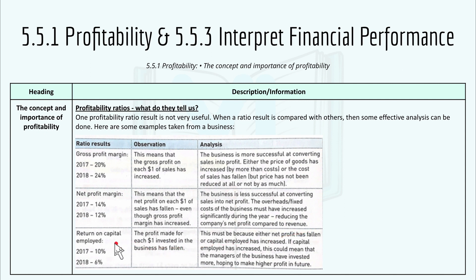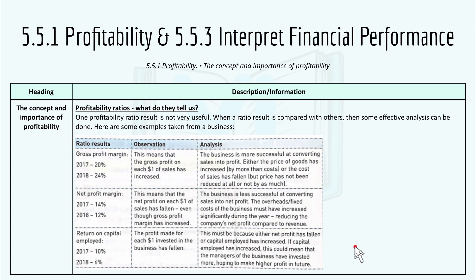For Return on Capital Employed, if 2017 was 10% and 2018 was 6%, this means the profit made for each $1 invested in the business has fallen. This must be because either net profit has fallen or capital employed has increased. If capital employed has increased, this could mean that managers have invested more, hoping to make higher profit in the future.